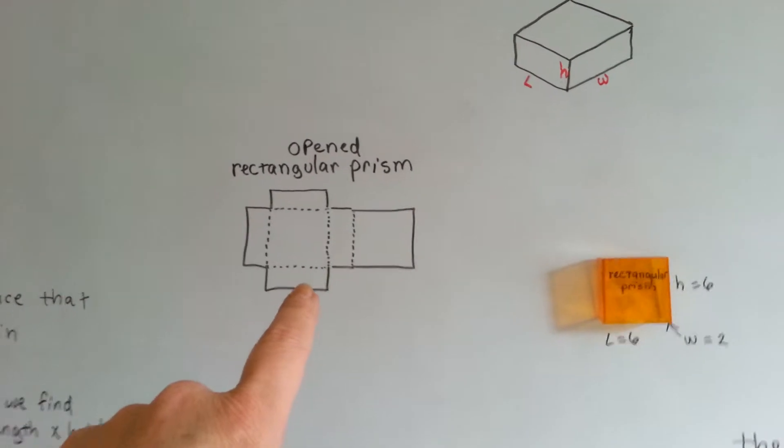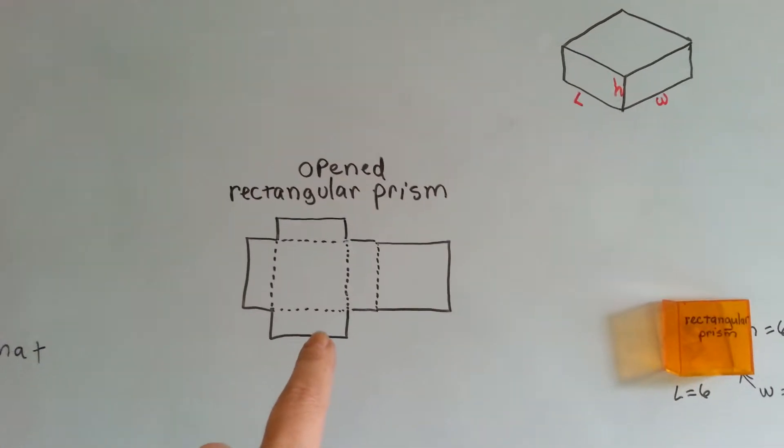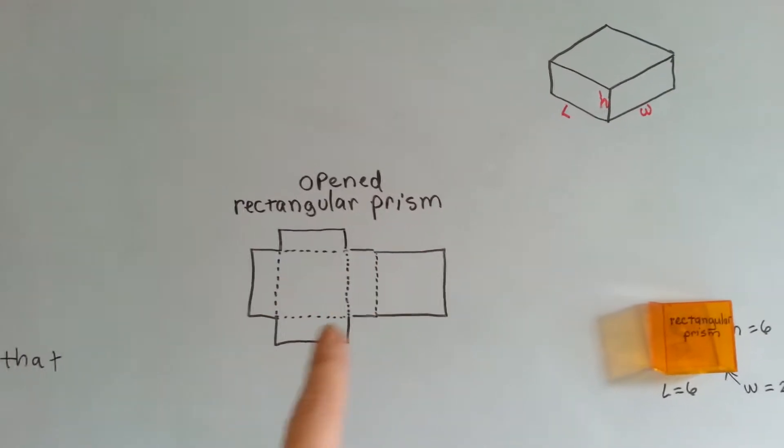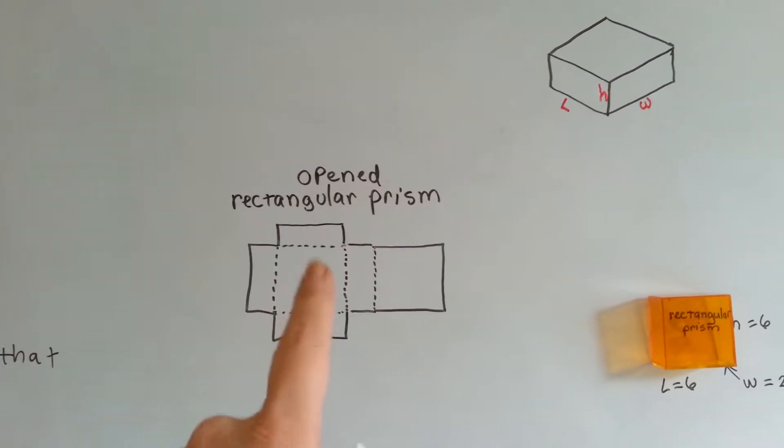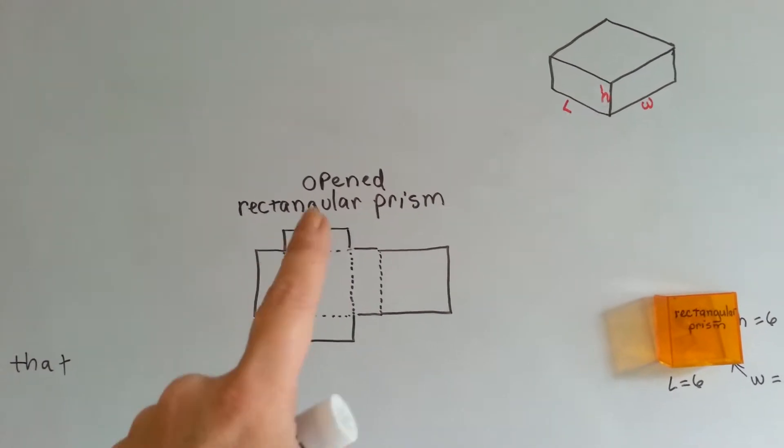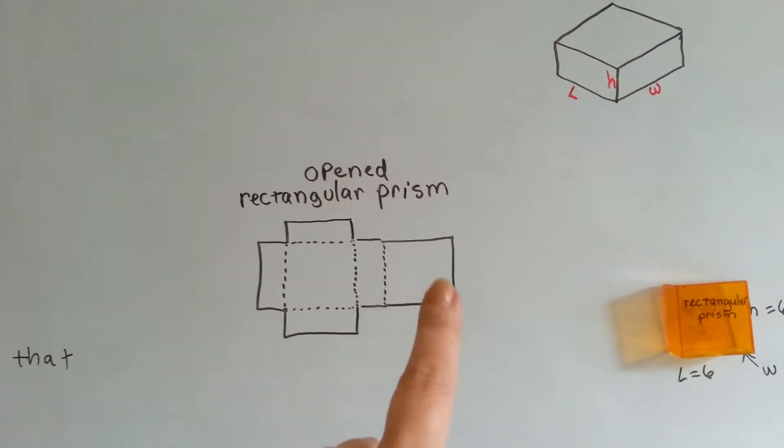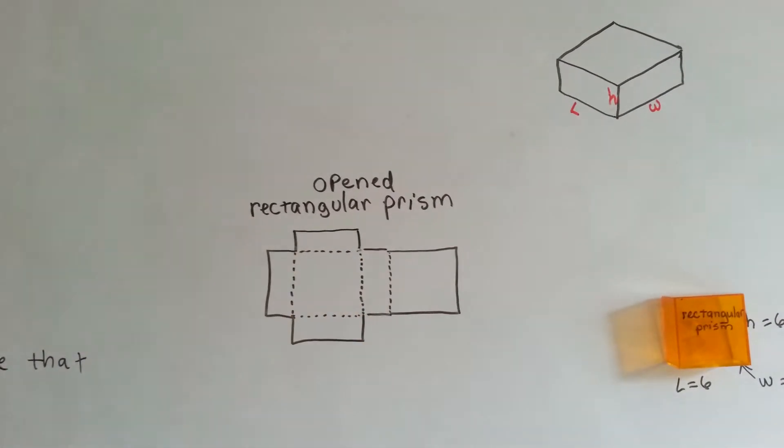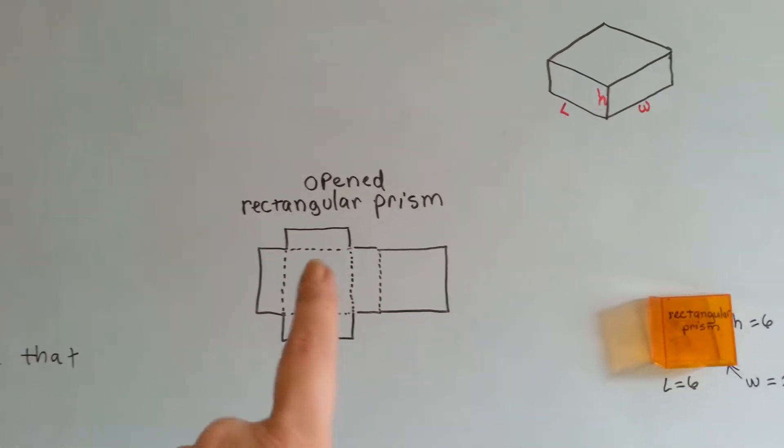This is what a rectangular prism looks like if it were to be unfolded. Here it is folded. If you were to unfold it, it would look like this. This would be the flat side that's sitting on the table. And then all these sides fold up, here's another side, and then that's the top that comes over. It's almost like, have you ever seen a cake box opened up? That's what it would look like.